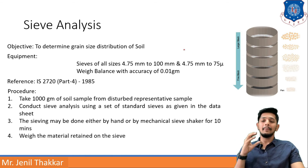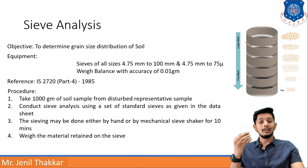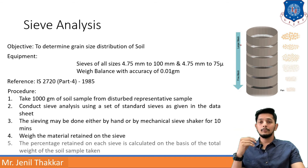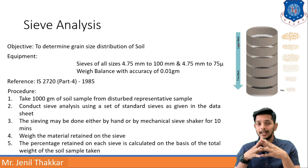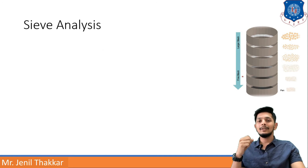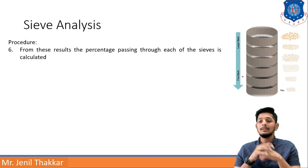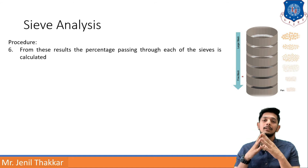Fourth step: weigh the material retained on each sieve. On each sieve there will be some material and you have to weigh it. After weighing, you will know the sizes of the sieves. The percentage retained on each sieve is calculated on the basis of total weight of the soil sample — total weight was 1000 grams. If 10 percent is retained on the second sieve, you get to know 10 percent of soil is of that size. Then the percentage passing through each sieve is calculated.